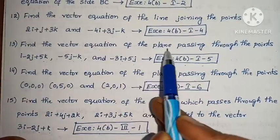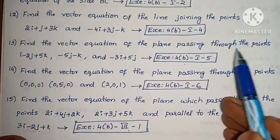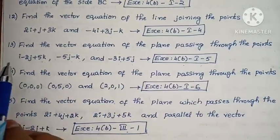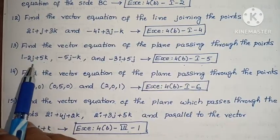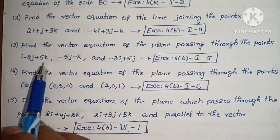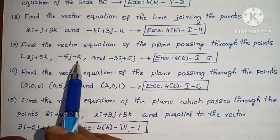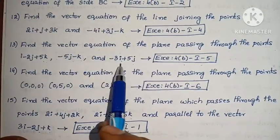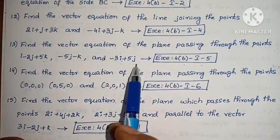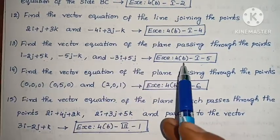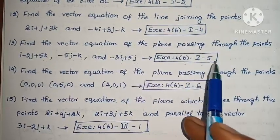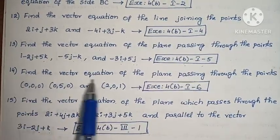Next: Find the vector equation of the plane passing through the points i minus 2j + 5k, minus 5j minus k, and minus 3i + 5j. Exercise 4B, problem 5.